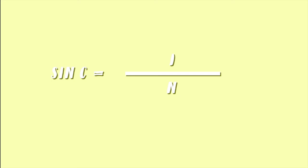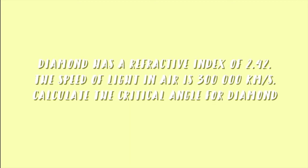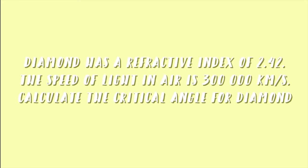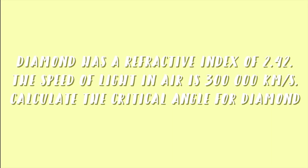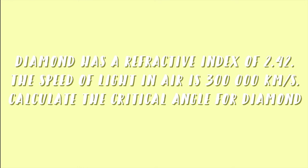Let's try to do a question. The question states that diamond has a refractive index of 2.42. The speed of light in air is 300,000 km per second. Calculate the critical angle for diamond. We have all the values needed, so simply substitute it into the equation, solve that out, and you should get an answer of 24 degrees.